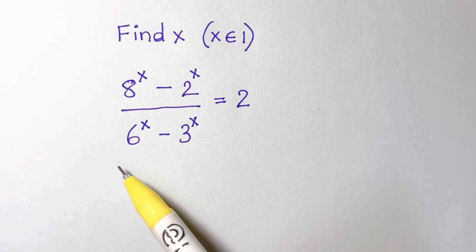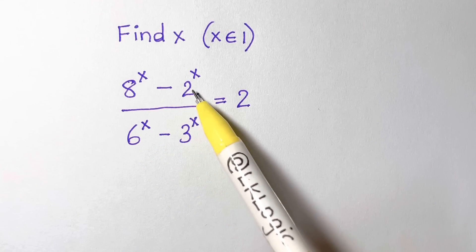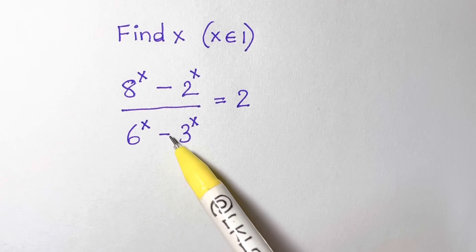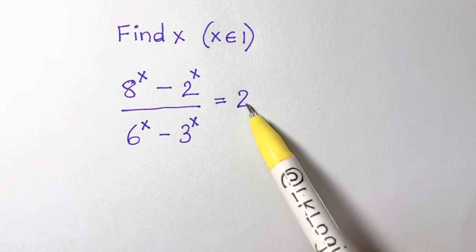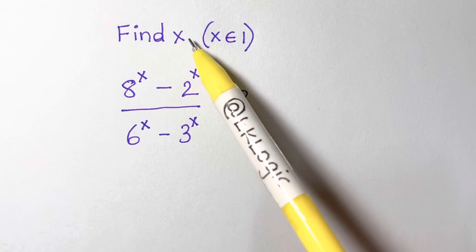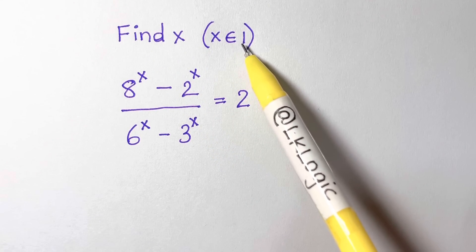Hi everyone. In this video we are going to solve this equation: 8 raised to x minus 2 raised to x, over 6 raised to x minus 3 raised to x, equals 2. We have to find the value of x where x belongs to integers.